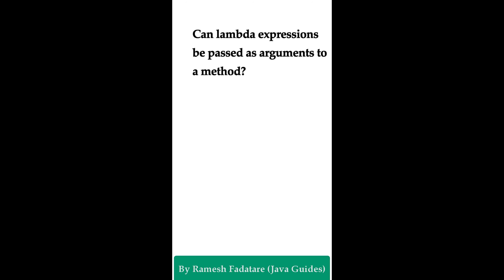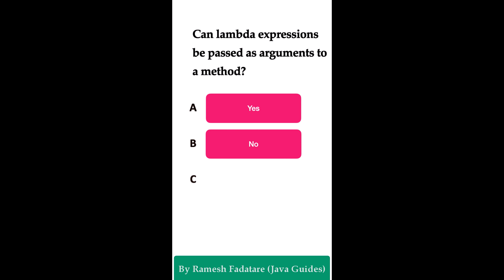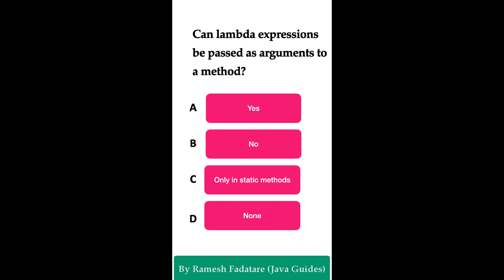Can lambda expressions be passed as arguments to a method? Option A: yes. Option B: no. Option C: only in static methods. Option D: none. The correct answer is yes. Lambda expressions can be passed as arguments to methods, particularly those that expect a functional interface as a parameter. A functional interface has a single abstract method, and we use a lambda expression to provide its implementation. For a method to accept a lambda, it must take a functional interface as a parameter.